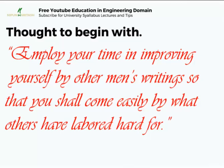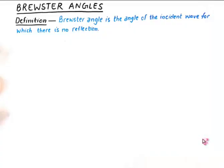By the definition of Brewster Angle, it's an angle of the incident wave for which there is no reflection. In order to understand this properly we need to have a background of what reflection coefficient is and what transmission coefficient is.